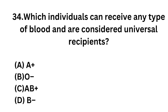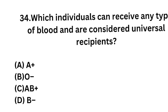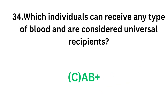Question number 34: Which individuals can receive any type of blood and are considered universal recipients? Option A: A positive. Option B: O negative. Option C: AB positive. Option D: B negative. The correct answer is Option C, AB positive. AB positive blood group is considered the universal recipient.